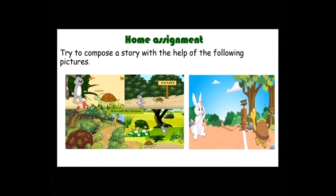This is the time for home assignment. Try to compose a story with the help of the following pictures. Nietzsche kuch pictures dikhayaan gayaan han — ena nu use karke inna di help denali k story compose karan di košish karo. Do characters hai — tortoise and hare. Aur phir thuan nu dikh rahe hai jithe start likhi hai, matlab ke koji race shuru hoi hai. Agli picture dekho jide vich hai — tortoise pich hai.